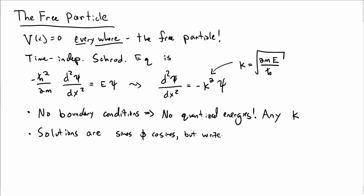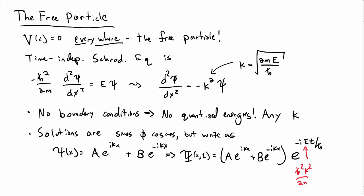We're actually going to write them in terms of complex exponentials. So we'll write solution psi of x as A e to the i kx plus B e to the minus i kx. That tells us that the full time-dependent wave function is the A e to the i kx plus B e to the minus i kx times e to the minus i energy t over h-bar. This energy E up here is h-bar squared k squared over 2m.